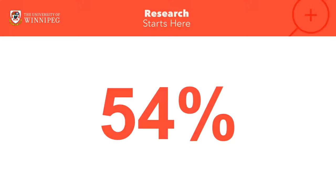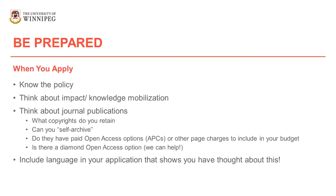We're doing what we can to bump everybody up and get us into a slightly better rate of compliance with the policy — not just because it's policy, but also because there's good reason for the policy existing, and we do want to make sure that our research is freely accessible. I've got some general tips to think through, and again, these can be general tips. They don't just apply to tri-agency grants, but the policy I'll talk about most will be the tri-agency policy.